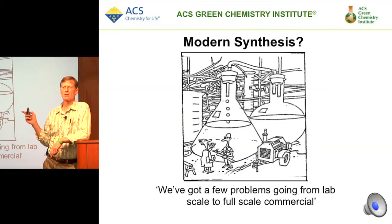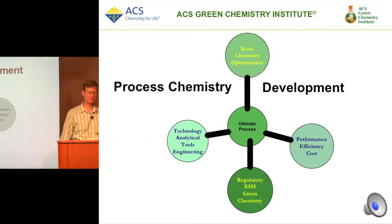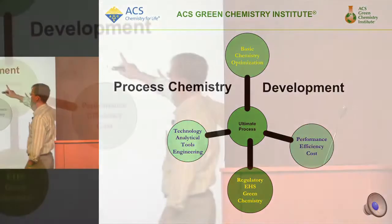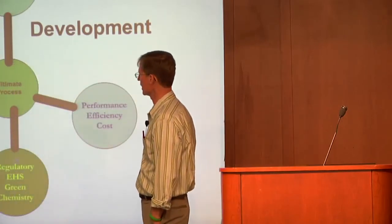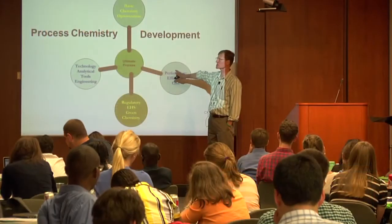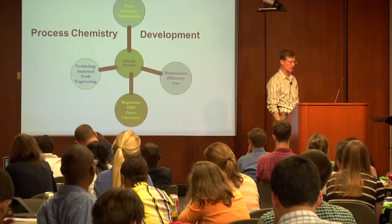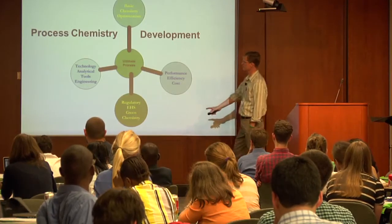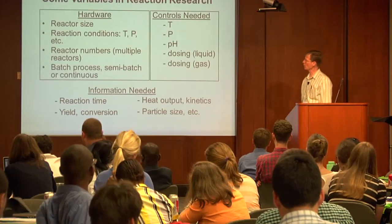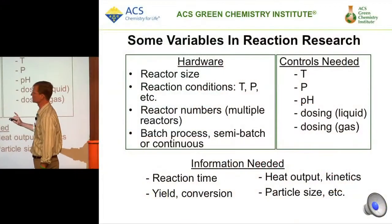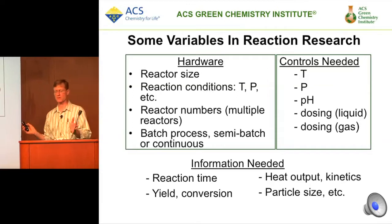What modern chemistry tries to do is take something from the laboratory and just make it bigger. Process development is a combination of basic chemistry optimization — where academically most people spend their time — performance, efficiency, and cost for chemical engineers, analytical tools and engineering, and then, very much at the bottom, regulatory EHS and green chemistry. When we think about process development, reactor size makes a huge difference in terms of both mass and heat or energy transfer.